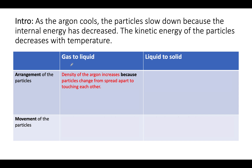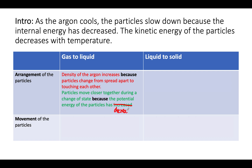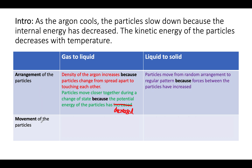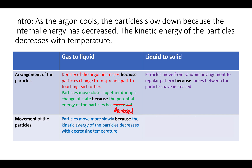We can also say the particles move together because the potential energy of the particles has decreased — remember, during a change of state the kinetic energy stays the same but the potential energy decreases. For the movement aspect of the first paragraph, the particles move more slowly because the kinetic energy of the particles decreases with decreasing temperature.